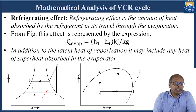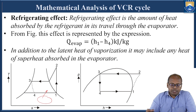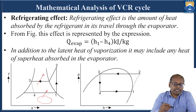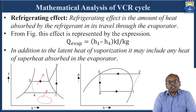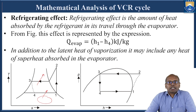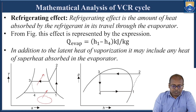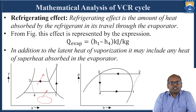Here, heat is absorbed from the space to be refrigerated; it is compressed and heat is rejected to the surroundings. The amount of heat absorbed during the process from point 4 to point 1 is called the refrigerating effect. The refrigerating effect is the amount of heat absorbed by the refrigerant in its travel through the evaporator. During the evaporation process, the amount of heat absorbed by the refrigerant is called the refrigerating effect.